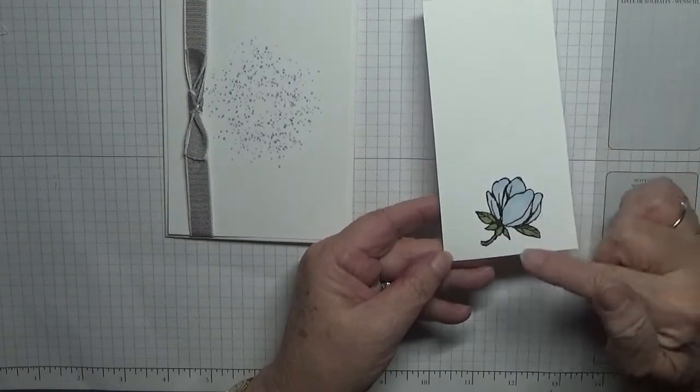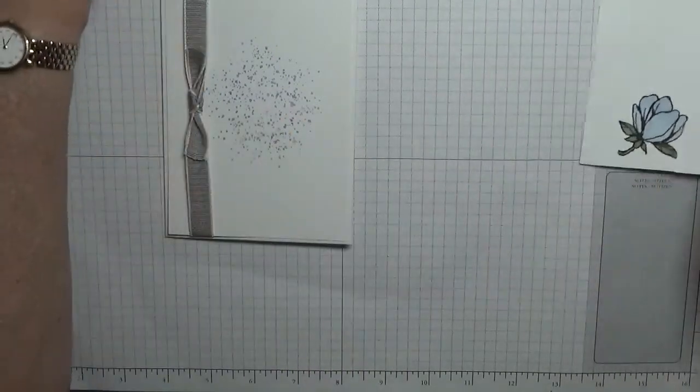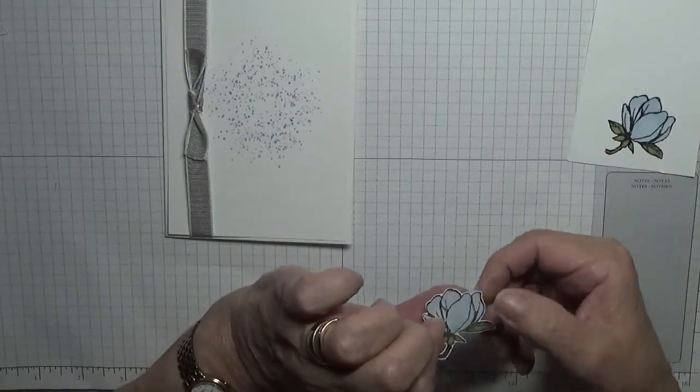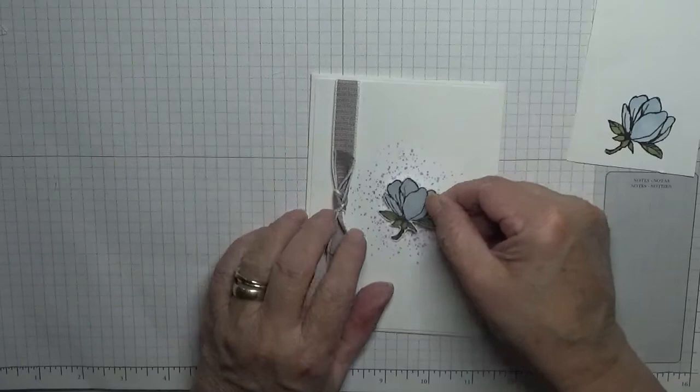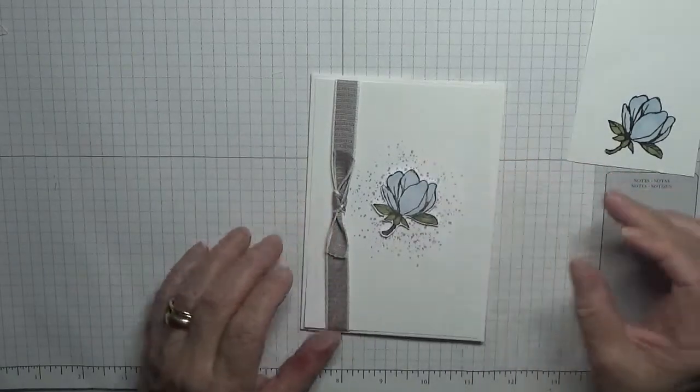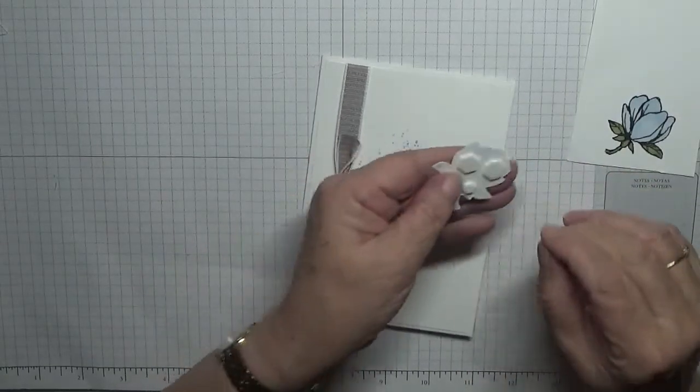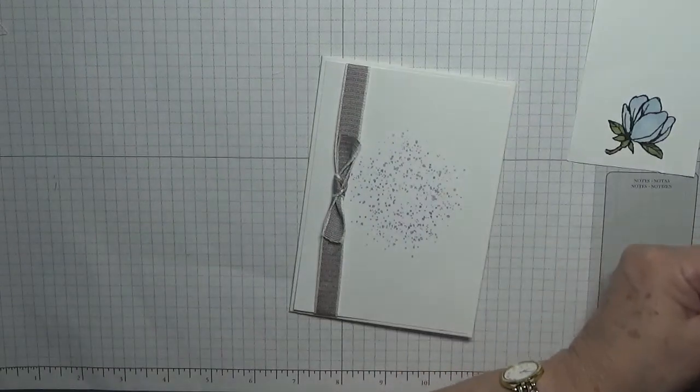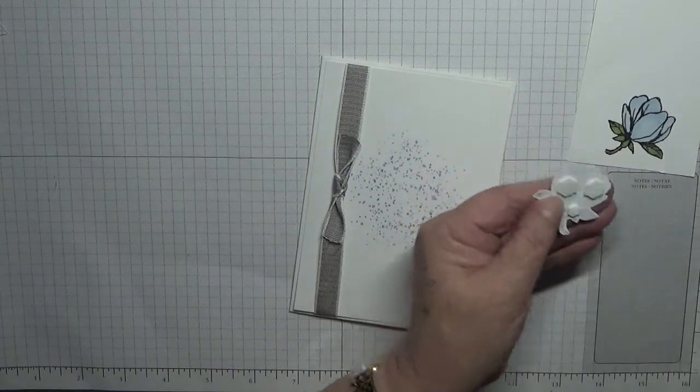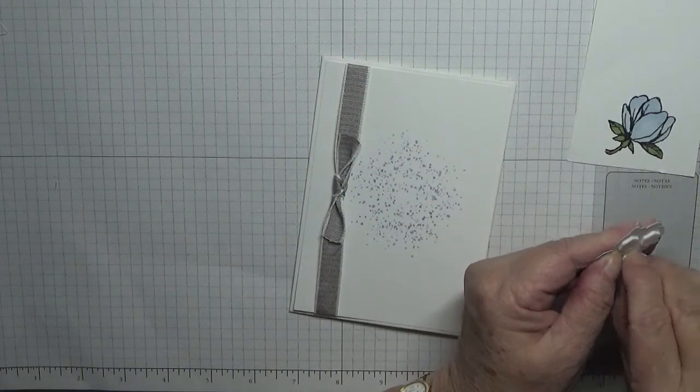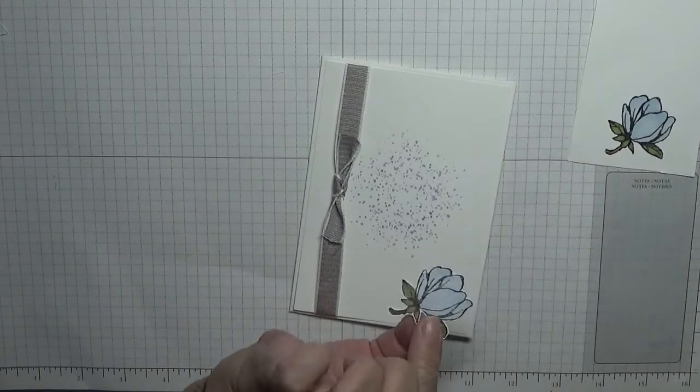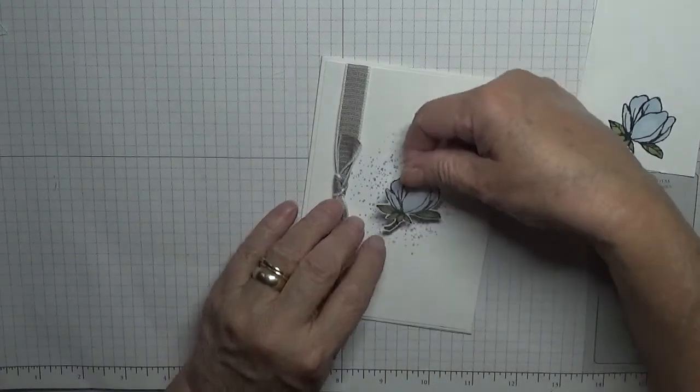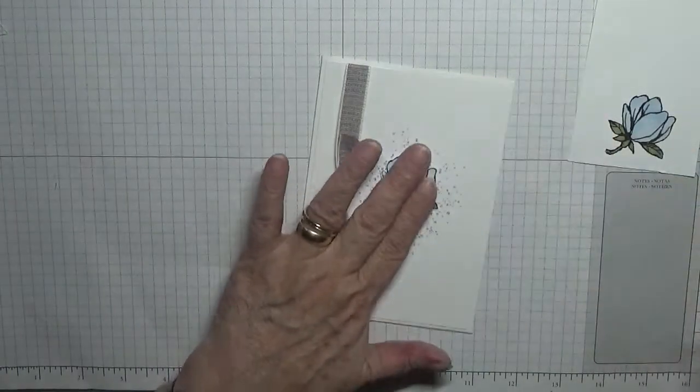And then you would either fussy cut or die cut that out. And then you'll be left with that. And that just sits in the middle there. Take the backings off. I've already put dimensionals on it. And we're going to set that like that there.